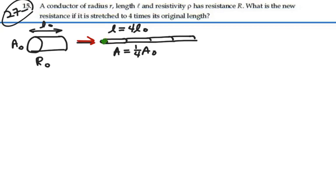The reason being is that the volume must stay constant. So our new volume must equal the old volume. And our new volume is the area times the length. The old volume is the original area times the original length.